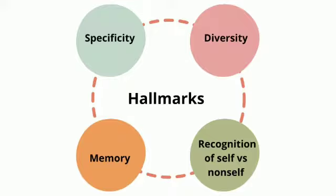Third, the ability of distinguishing self from non-self or foreign, so that immune response is mounted only towards the foreign. And fourth, immunological memory or anamnesis, defined as the ability to remember the first contact with an antigen and respond more powerfully to the same in all subsequent encounters.